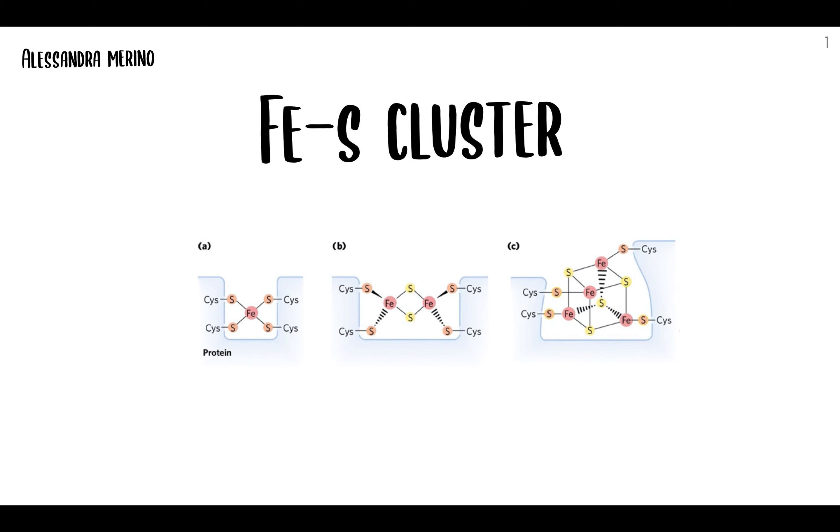So what do they do? Iron-sulfur clusters function as electron-carrying molecules in the respiratory chain. They are capable of transferring only one electron at a time and they're able to be oxidized and reduced, which makes them extremely useful and essential to electron flow. They are prosthetic groups, and what does this mean? This means that they're tightly bound to their corresponding proteins and they can actually be found in complex one, two, and three of the electron transport chain, which I will go into details of later.